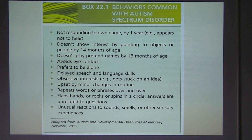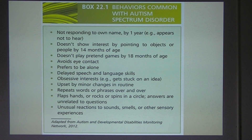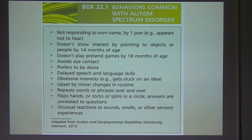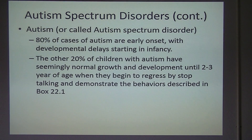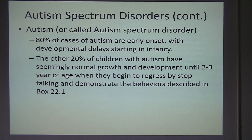Some common behaviors seen in young children include: not responding to their own name by age one, not showing interest in objects or people by 14 months, avoiding eye contact, having a delay in speech and language, being upset by minor changes to routine, and showing stereotyped motor behaviors such as hand flapping, body twisting, or head banging. About 80% show early onset, but 20% won't develop symptoms until two to three years of age.